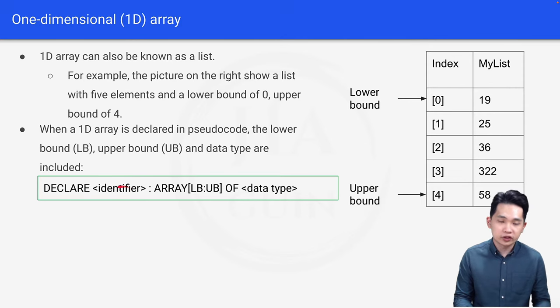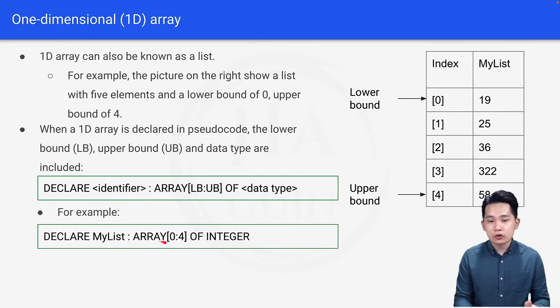You put the name which is the identifier, you put the lower bound, you put the upper bound as well as the data type. So for you to understand better, let's look at one example. Let's create this array on the right here. In order to create this array, we will be declaring MyList: ARRAY[0:4] OF INTEGER.